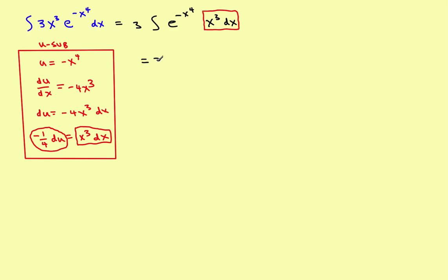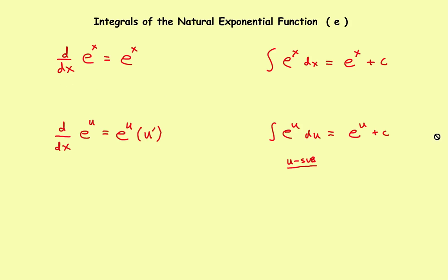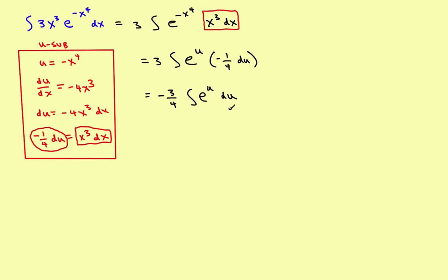With the constant 3 still outside, the integral becomes 3 times the integral of e to the u times negative one-fourth du. Bringing the negative one-fourth outside gives negative three-fourths times the integral of e to the u du. The antiderivative of e to the u is e to the u plus c. Replacing u with negative x to the fourth gives the final answer: negative three-fourths e to the negative x to the fourth plus c.